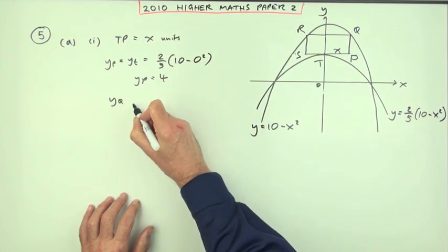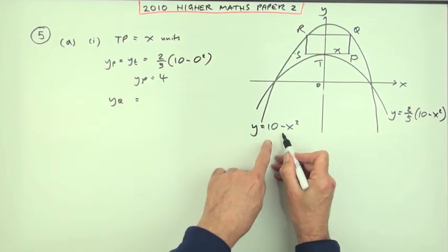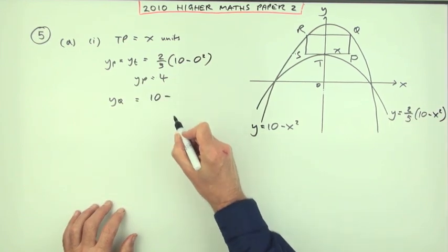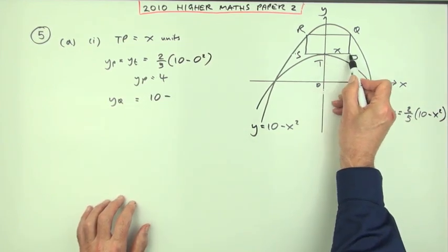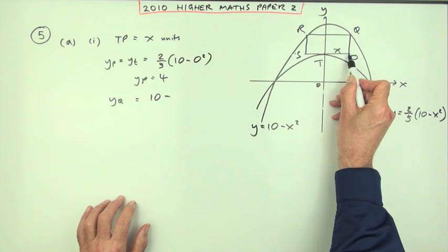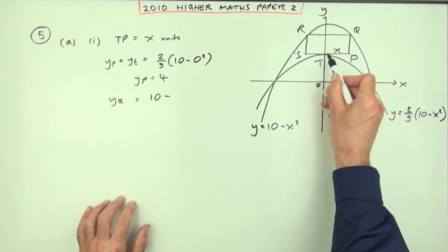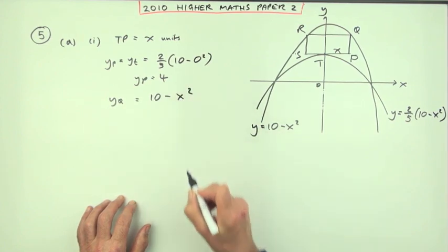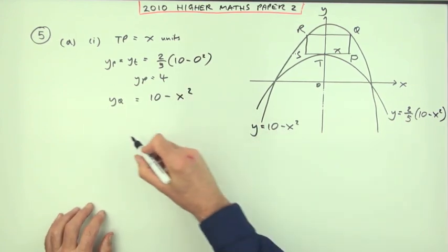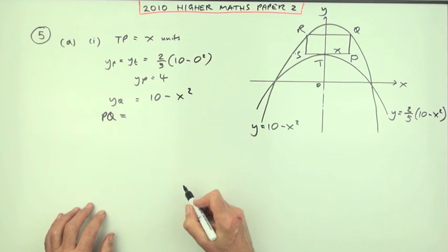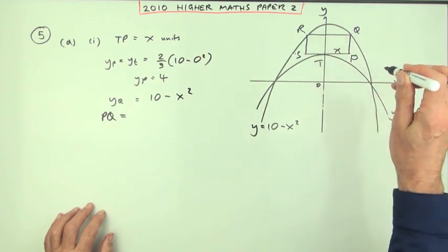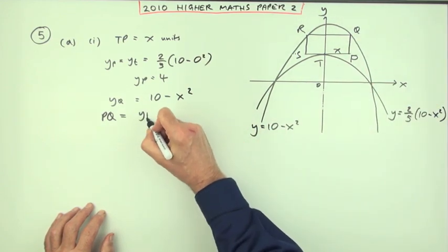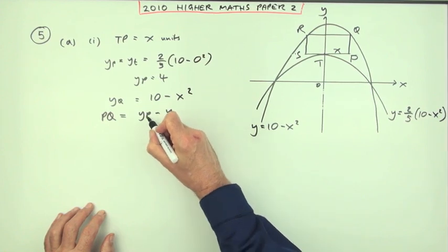The y-coordinate of Q will simply be 10 minus whatever you've decided to call this distance along until you're directly under Q, which you've decided just to call x. So it'll just be 10 minus x squared, which means the distance PQ that you were looking for will be the y-coordinate of Q minus the y-coordinate of P. I don't really need to spell it out, but I'll put it down this way.